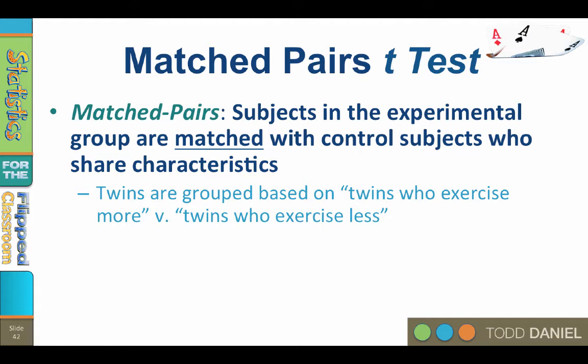We take the twin pairs and group them based upon which twin exercises more versus which twin exercises less, so each twin will be in a different group. We will have two groups, but the groups are not independent of each other.